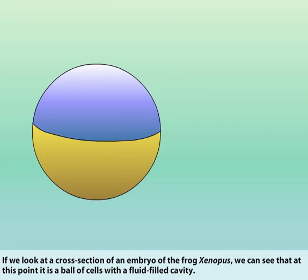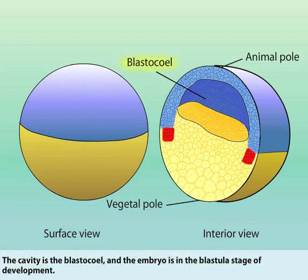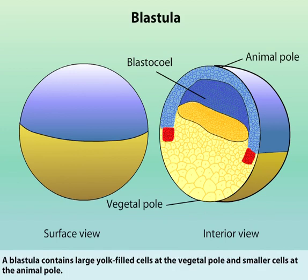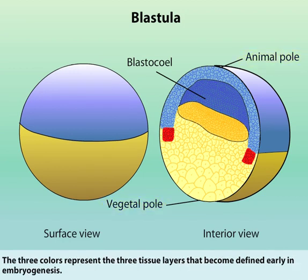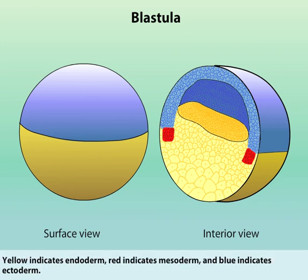If we look at a cross-section of an embryo of the frog Xenopus, we can see that at this point it is a ball of cells with a fluid-filled cavity. The cavity is the blastocele and the embryo is currently in the blastula stage of development. A blastula contains large yolk-filled cells at the vegetal pole and smaller cells at the animal pole. The three colors represent the three tissue layers that become defined early in embryogenesis: yellow indicates endoderm, red indicates mesoderm, and blue indicates ectoderm.